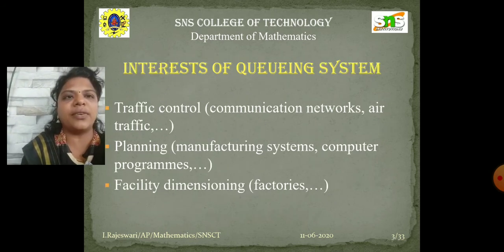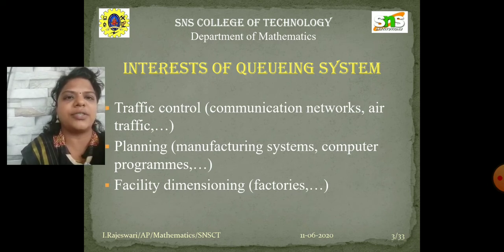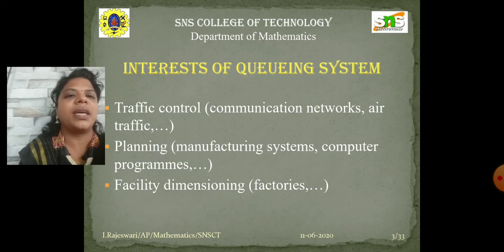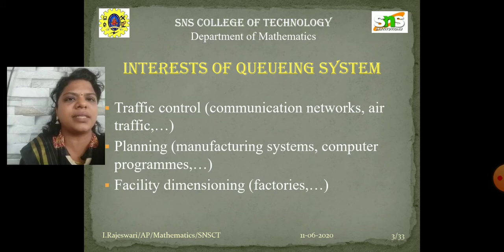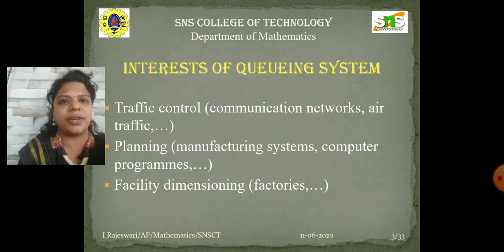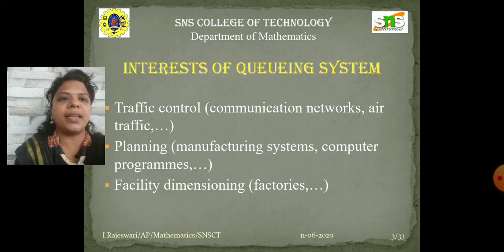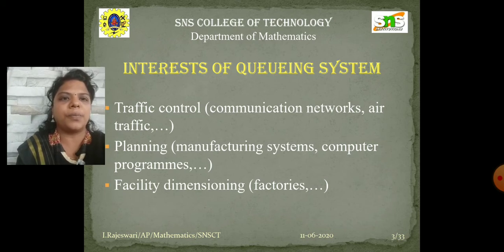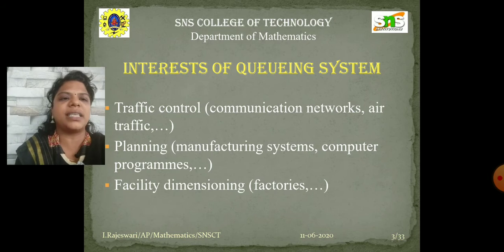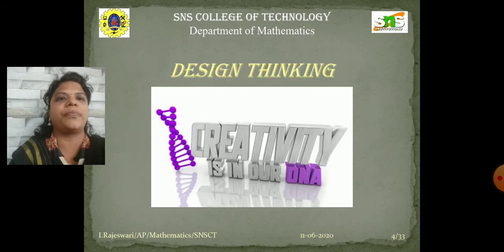Next, we are going to look at the areas of interest in queuing systems. There are totally three categories: traffic control, planning, and facility dimensioning. In traffic control, we consider topics such as communication networks, air traffic, and so on. In planning, we look at manufacturing systems, computer programs, and so on. Facility dimensioning means we consider factories and so on.